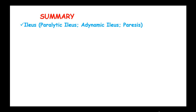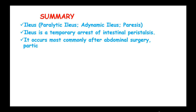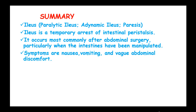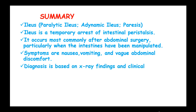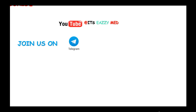In summary, paralytic ileus refers to temporary arrest of intestinal peristalsis. It occurs most commonly after abdominal surgery, particularly when the intestines have been manipulated. Symptoms include nausea, vomiting, and vague abdominal discomfort. The diagnosis is based on x-ray findings and clinical impression, and treatment is supportive with nasogastric suction and intravenous fluids.